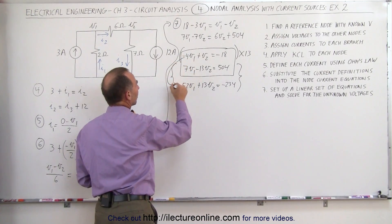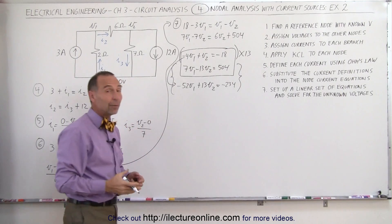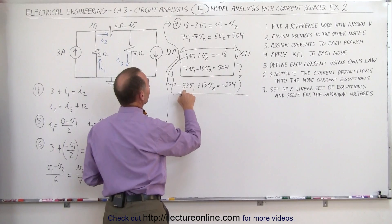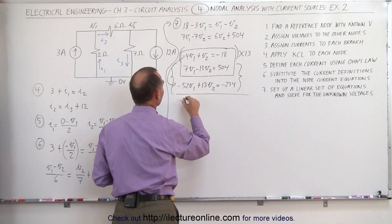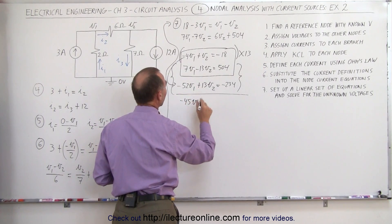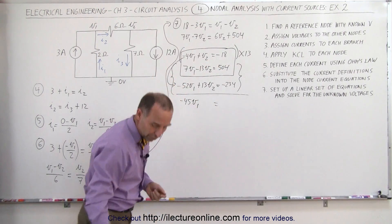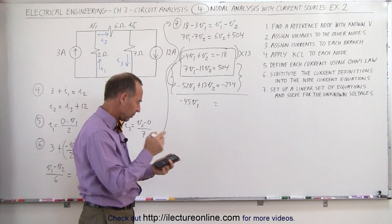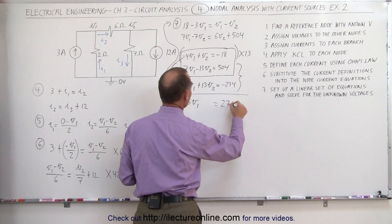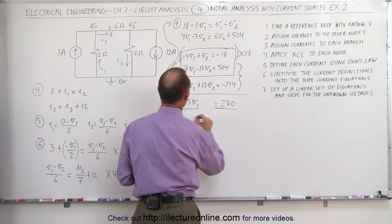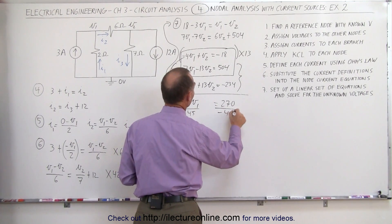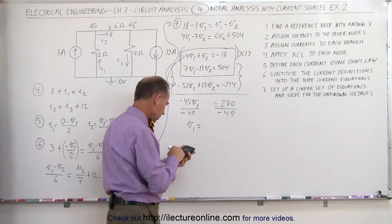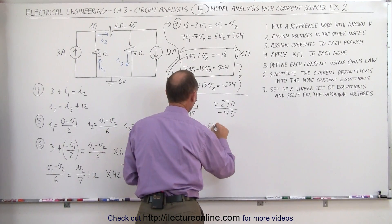That becomes a minus 234 and we're going to add these two equations together. So it's the first equation turned into this by multiplying it by 13. Then when I add the two together, you can see that the V2s will drop out. Minus 52 V1, add 7 V1, that becomes a minus 45 V1. The V2s drop out and 504 minus 234, that equals 270. Dividing both sides by a minus 45, notice then that V1 is equal to a minus 6 volts.